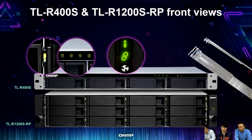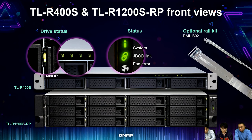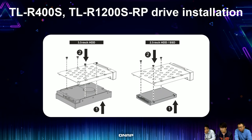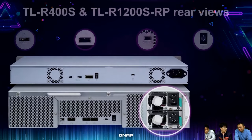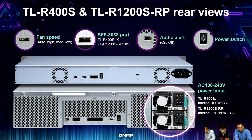For rackmount models the status indicators are the same as the desktop J-Bot. We provide an optional rail kit (Rail-B02) to put them into your rack. Drive installation on rackmount requires screws for all models since it's usually in a secure place handled by IT professionals. The rear view has the same design as the desktop model: fan speed settings, number of ports, and audio alert switches.